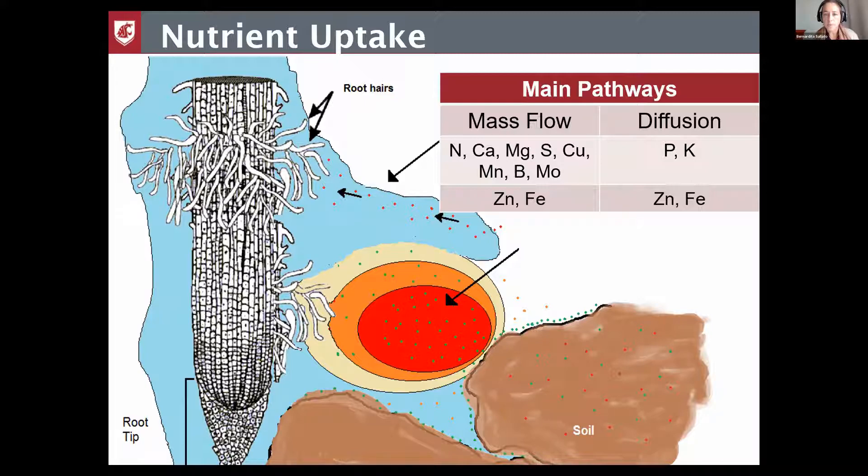Now, there are differences between nutrients. Most of them go through mass flow. That means they go with the flow with water. So nitrogen, calcium, magnesium, sulfate, copper, manganese, boron, and molybdenum, they all go with the water flow that gets into the plant. That means that we need to have uptake of water. So moisture and transpiration are also very important factors to be able to have these nutrients in the plant.